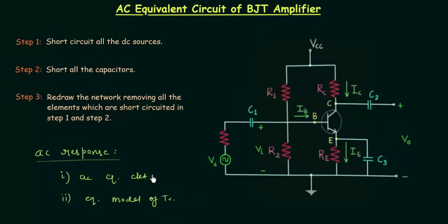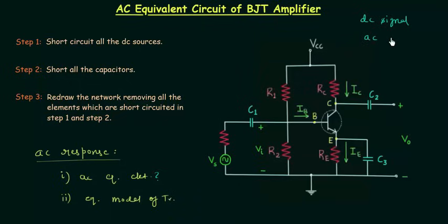What is an AC equivalent circuit? When we analyze the BJT amplifier circuit for the DC signal, the whole circuit will not come into the picture. In the same way, when we analyze the BJT amplifier circuit for the AC signal, the whole circuit will not come into the picture. So we have to simplify this circuit for the AC analysis.